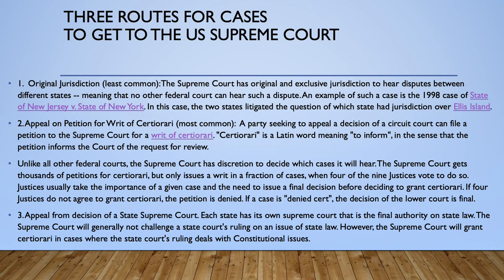The most common way that cases get to the U.S. Supreme Court is an appeal by petition for writ of certiorari. To get to the Vermont Supreme Court, you would just file your appeal. But in the U.S. Supreme Court, you have to ask for permission to appeal, and that request for permission is a petition for writ of certiorari. A party seeking to appeal a decision of one of the circuit courts of appeals files this petition, and unlike all other federal courts, the Supreme Court has the discretion to decide which cases it will hear. They get thousands of petitions every year and only take a very small number of cases — usually when there is a circuit split on a very important issue they want to decide for the whole country.